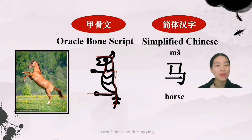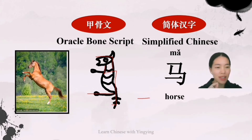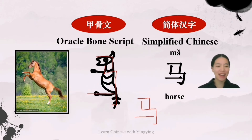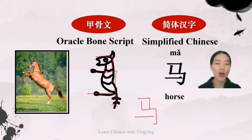Now let's write the word together. The first stroke is a straight line with a sharp turn into a vertical line. Then a vertical line with a sharp turn into a horizontal line, another sharp turn into a vertical line with a hook. And then a long horizontal line. Here we have it — the word 马 (mǎ), it means horse.